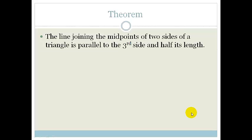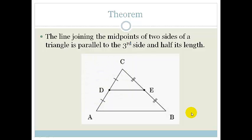So let's look at it. It says the line joining the midpoints of two sides of a triangle is parallel to the third side and half its length.